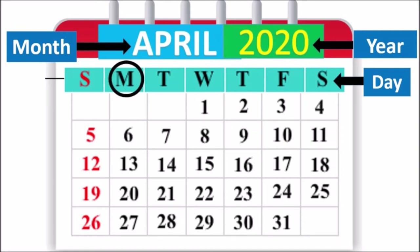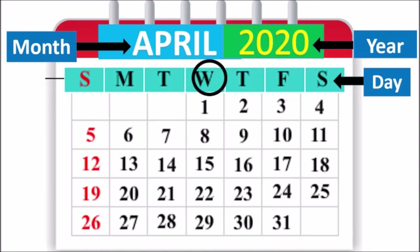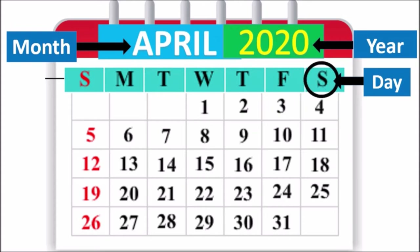M tells us Monday. T tells us Tuesday. W tells us Wednesday. T tells us Thursday. F tells us Friday. And this S tells us Saturday.